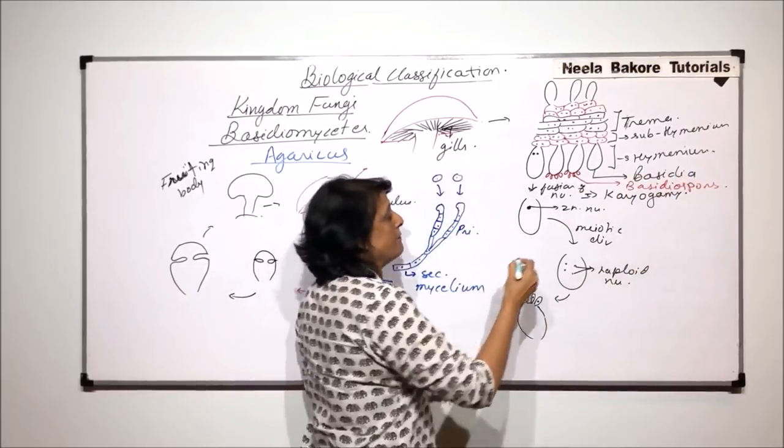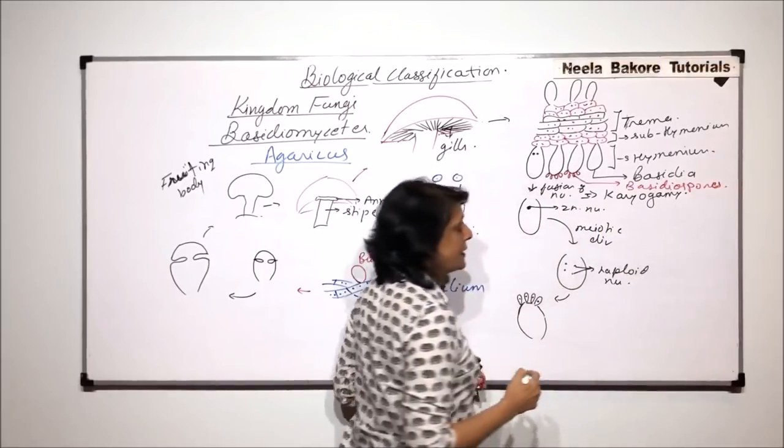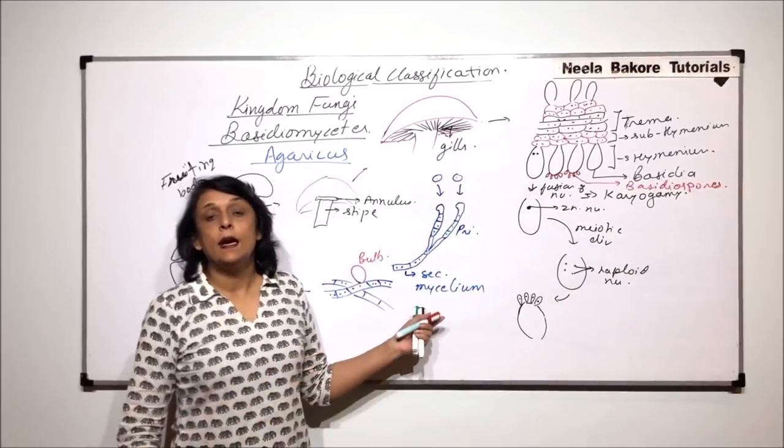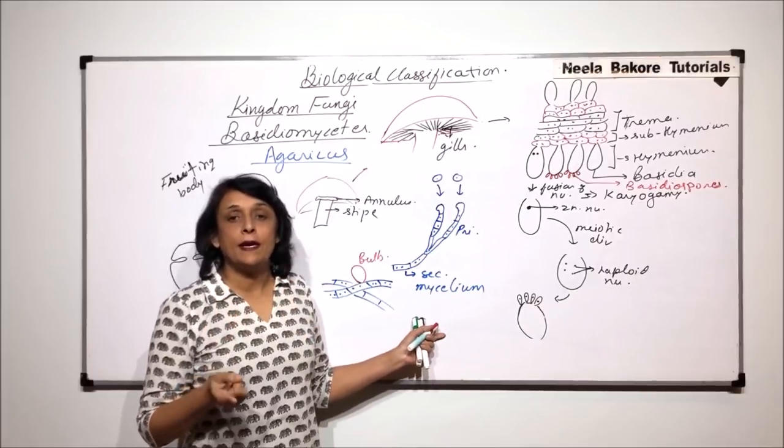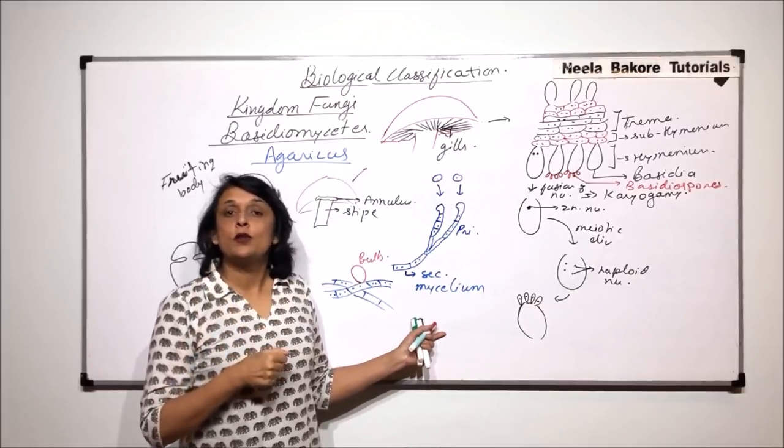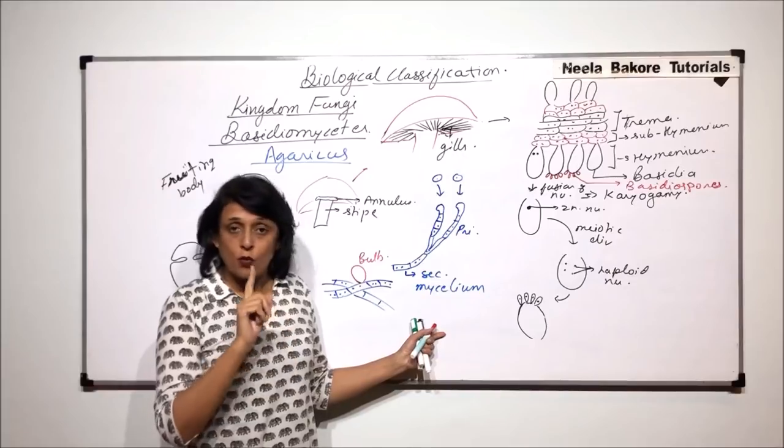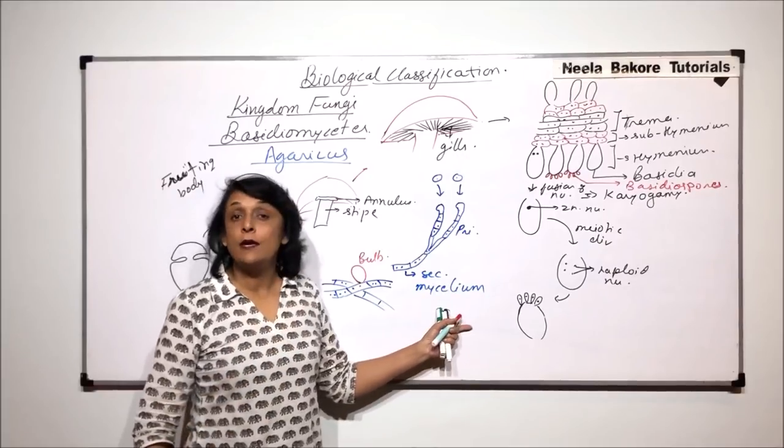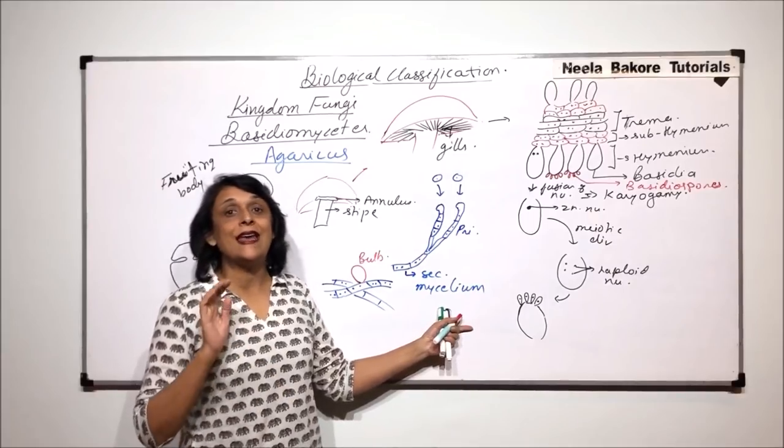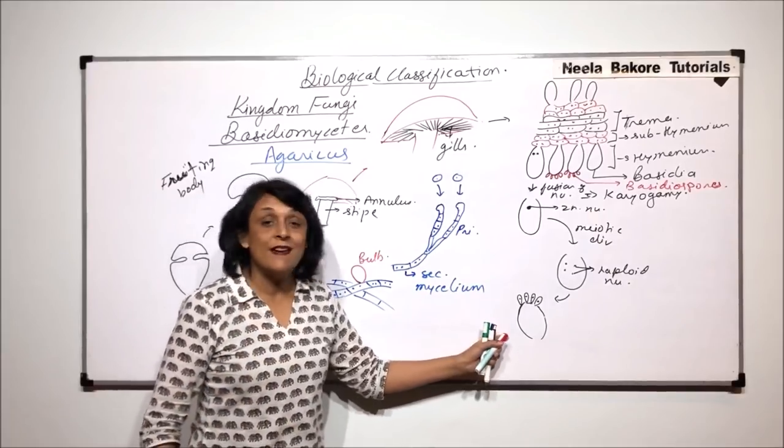If you remember, when we talked of ascomycetes, we said the number of ascospores varies from four to eight. If ascospores are produced after meiosis, only meiosis, then four ascospores are produced. And if that meiotic division is followed by mitosis, then eight ascospores are produced.